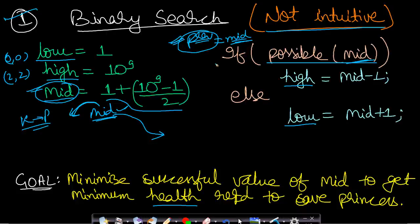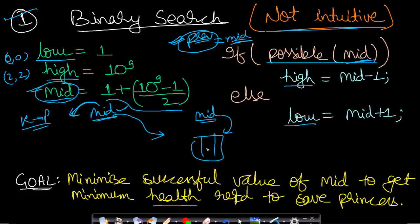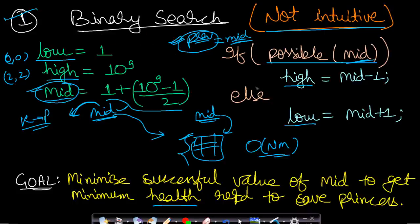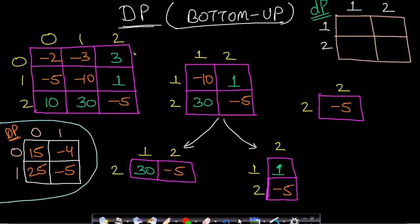However, this binary search approach is costly, because for each mid value you are finding all possible paths in the matrix. Dynamic programming can solve this in O(n*m) time, so binary search is much more costly and not recommended. Let us now see how to solve it using dynamic programming.